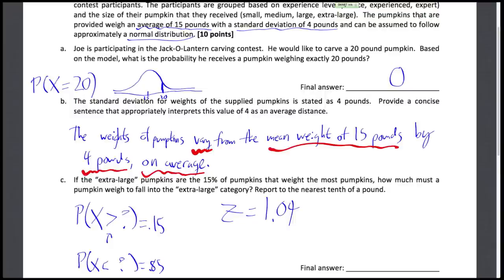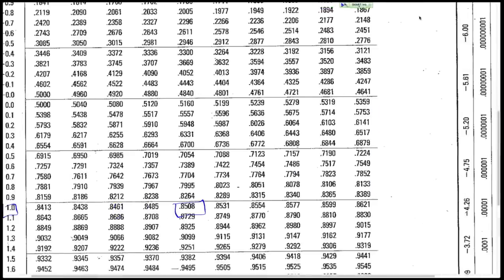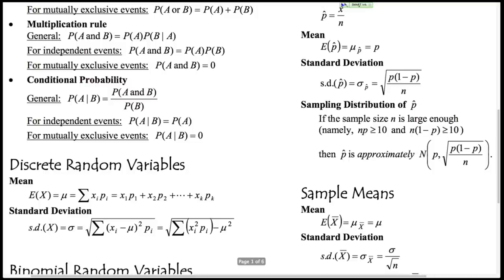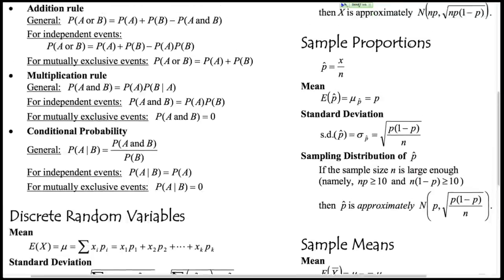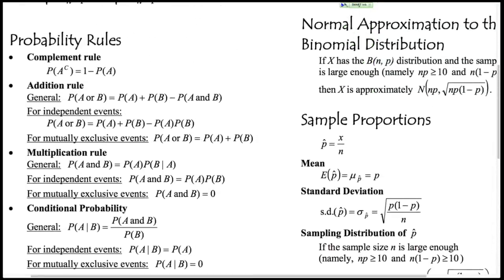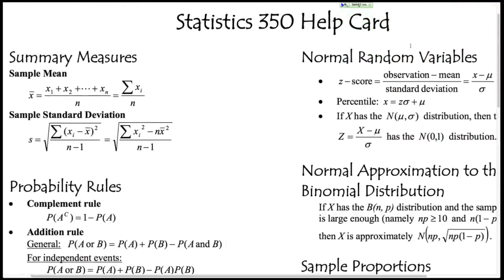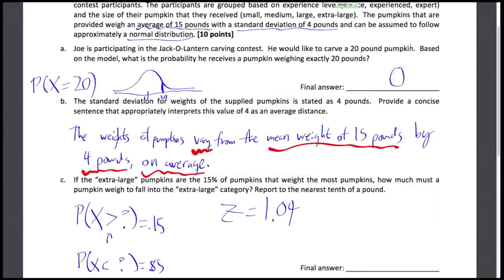But now we need to convert the Z score now into a pumpkin weight. And to do this, we're going to use the percentile equation from the formula card. And you can find that on the formula card back on the first page. Right here. So the percentile, if we have our Z score, the standard deviation and the mean, we can get back X or here, the pumpkin weight.